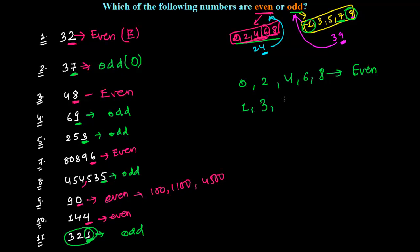Or any number whose last digit is either 1, 3, 5, 7, or 9. Those are odd numbers. That's it.